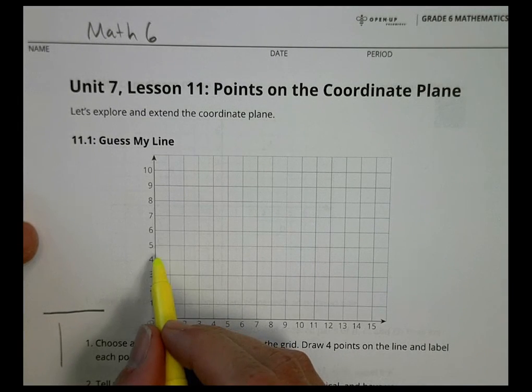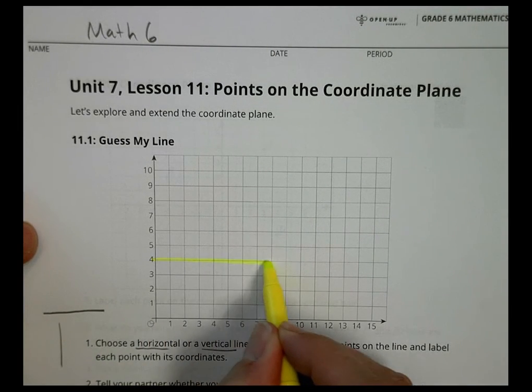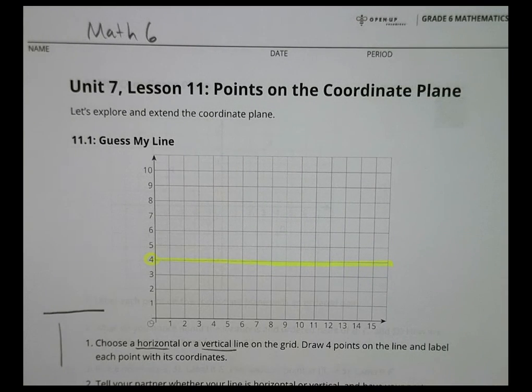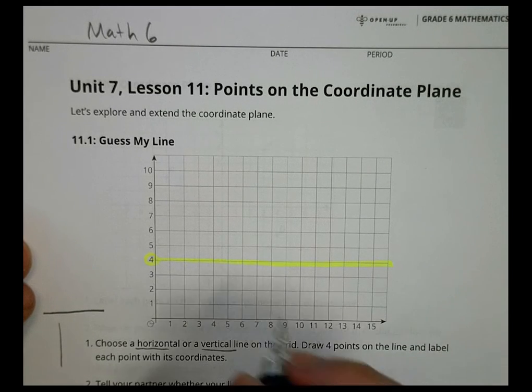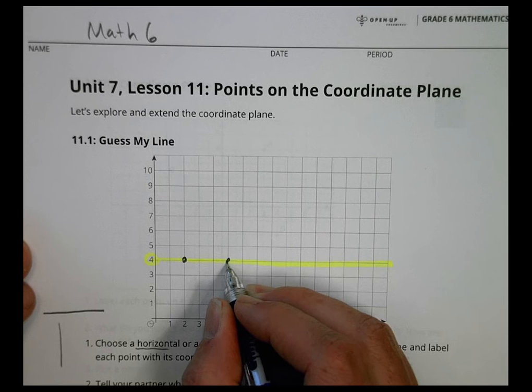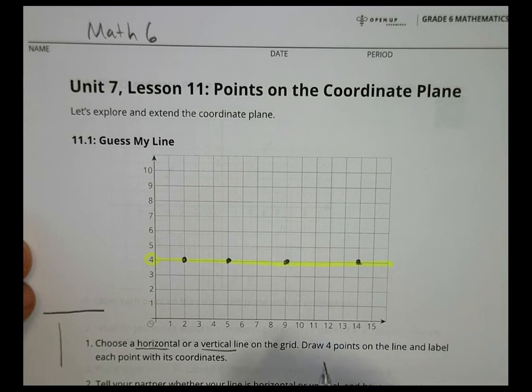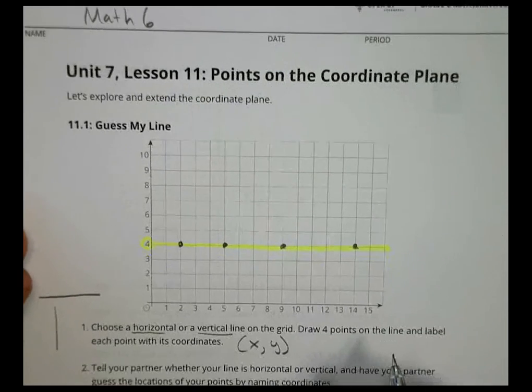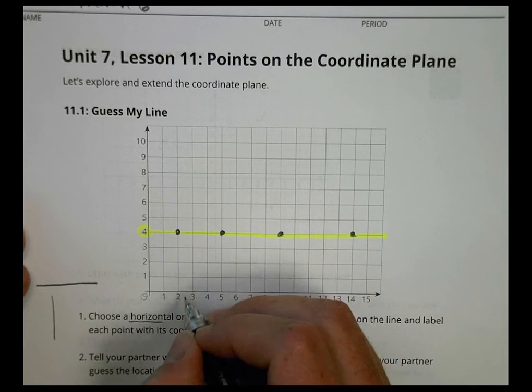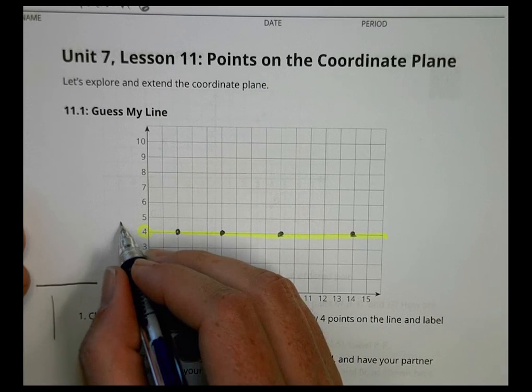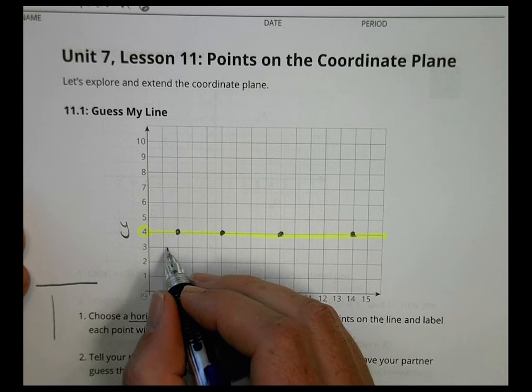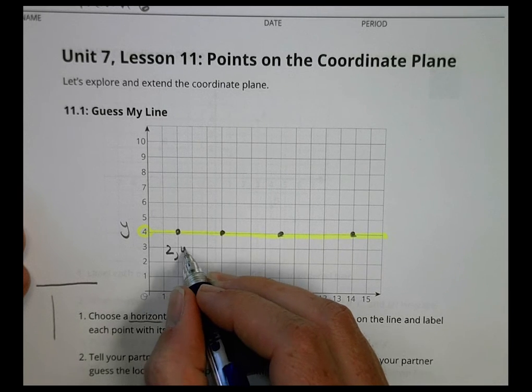For me, I'm going to go ahead and just choose this horizontal line right there as an example. It says to draw four points on a line and label each point with its coordinates. So I could pick a point here, and here, and here, and out here. When we label the coordinates, we're going to label the x value first with a comma and then the y value. In this case, I can look at the x value, which is these numbers here, and my y values here.